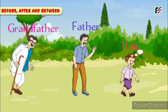Next, we can see Raju, Raju's father and Raju's grandfather. Can you tell me children, where is Raju's father standing? Raju's father is standing between Raju and Raju's grandfather.